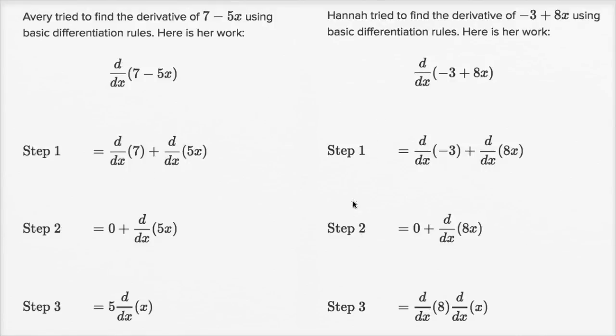We have two examples here of someone trying to find the derivative of an expression. On the left-hand side, Avery tried to find the derivative of 7 minus 5x using basic differentiation rules. Here is her work. On the right-hand side, Hannah tried to find the derivative of negative 3 plus 8x using basic differentiation rules. Here is her work.